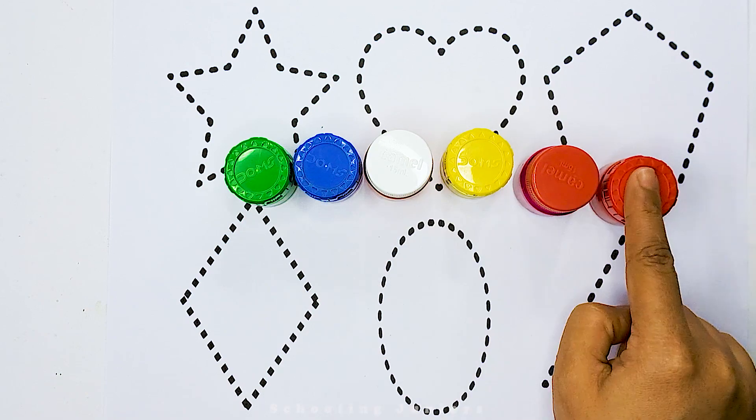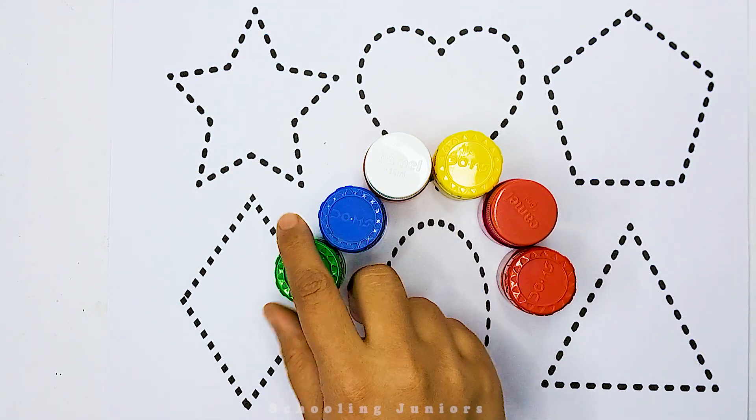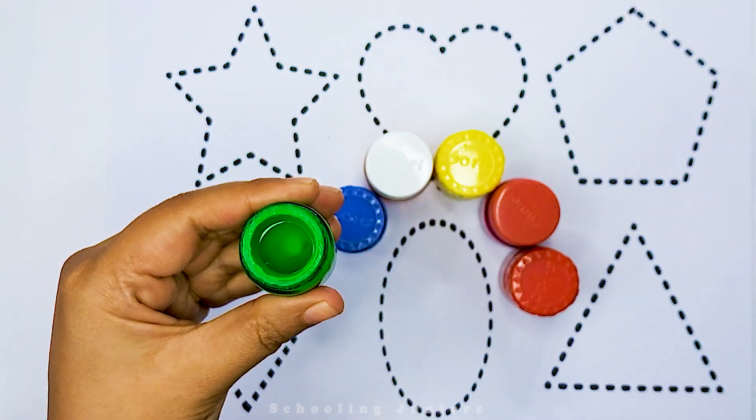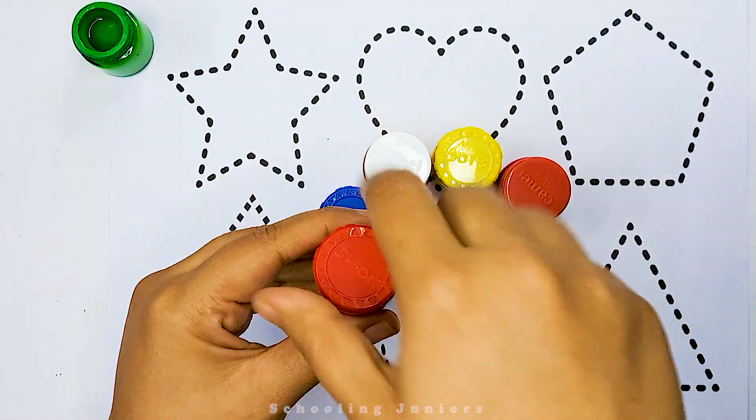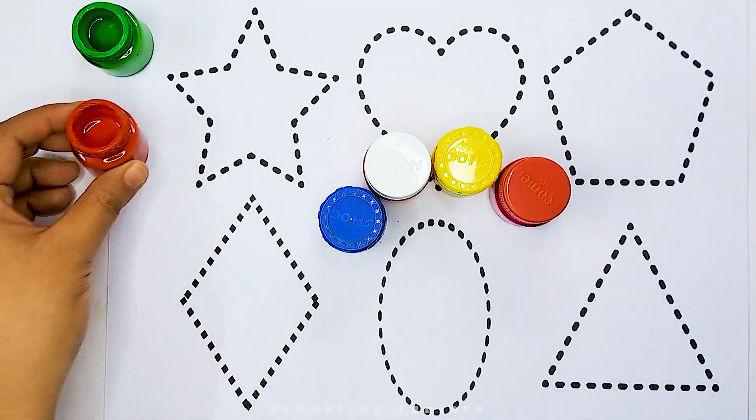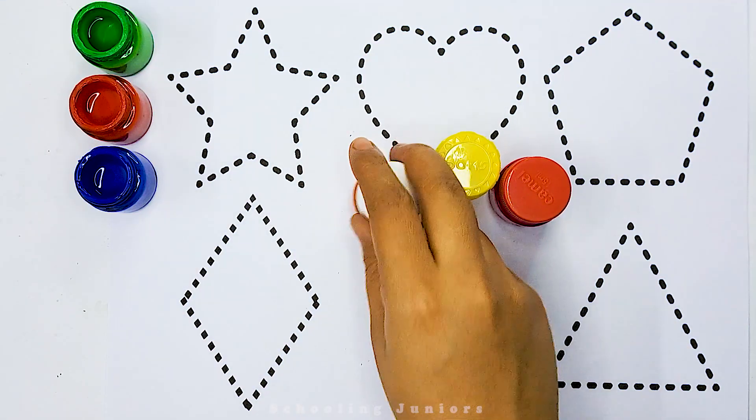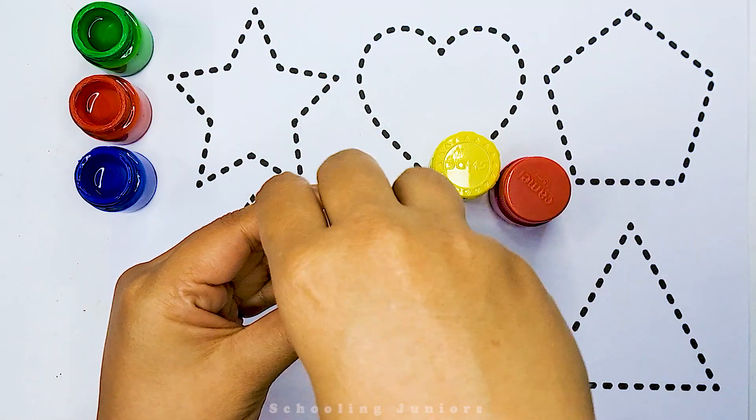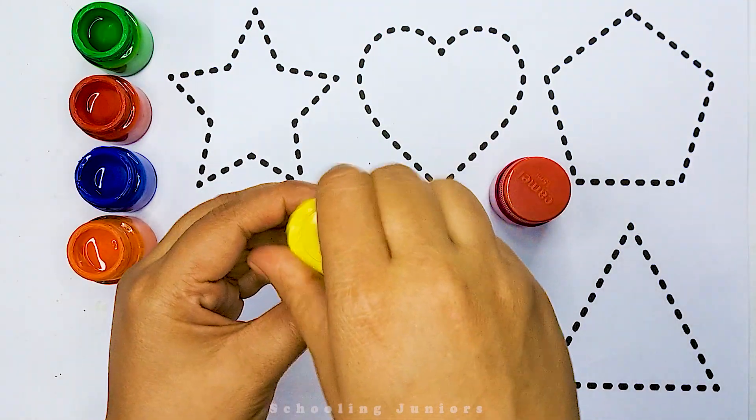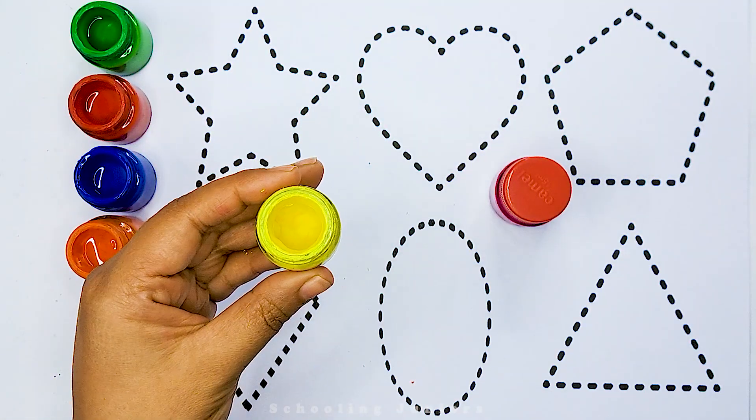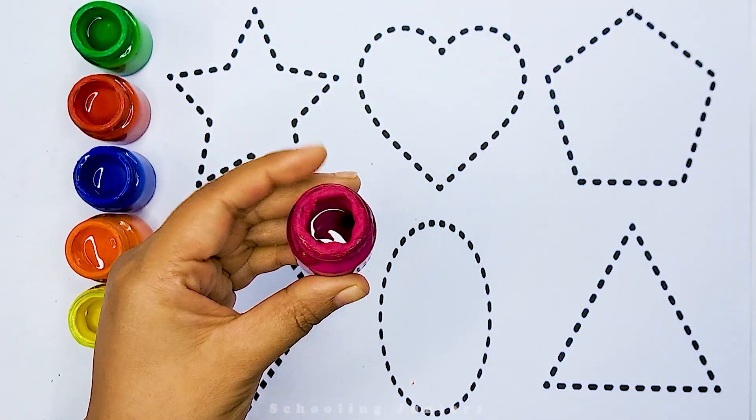So let's get started. This is our colours. This is green colour. This is red colour. This is blue colour. This is orange colour. This is yellow colour. This is pink colour.